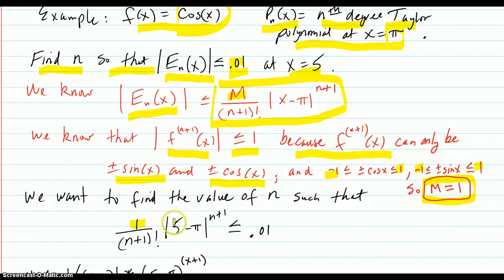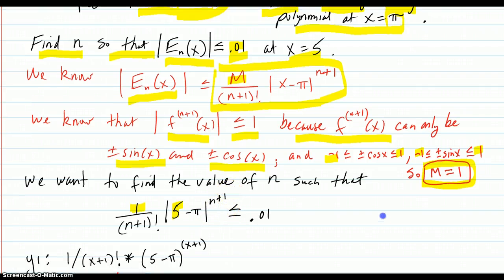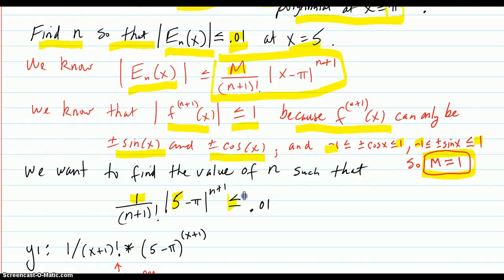And then your x that you're concerned with is 5. So it's 5 minus pi to the n plus 1. And we want that to be less than or equal to 0.01.